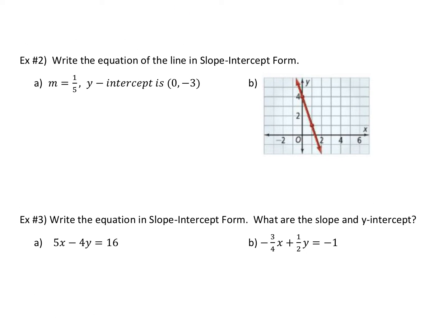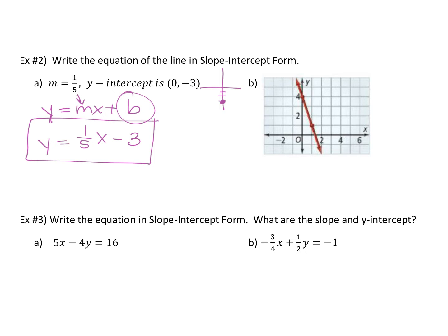So if you're given a slope and a y-intercept and they say put it into slope-intercept form, this should be the easiest problem you do all day. The form is y equals mx plus b. They're telling us what m is and what our y-intercept is. The y-intercept is the point (0, -3), so b equals negative 3. You're going to write that as y equals (1/5)x minus 3. That would be the equation of that line.